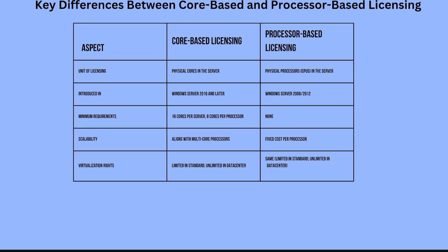Scalability: core-based licensing is designed for scalability, aligning with multi-core processors. Processor-based had a fixed cost per processor. Virtualization rights: both models offer limited VMs in Standard edition and unlimited VMs in Datacenter edition.